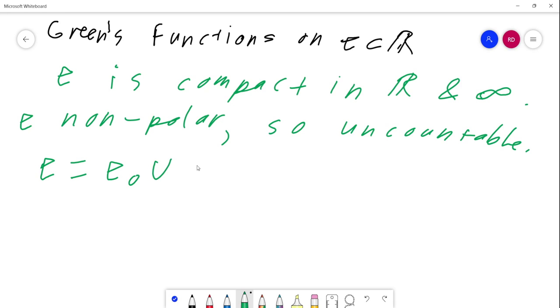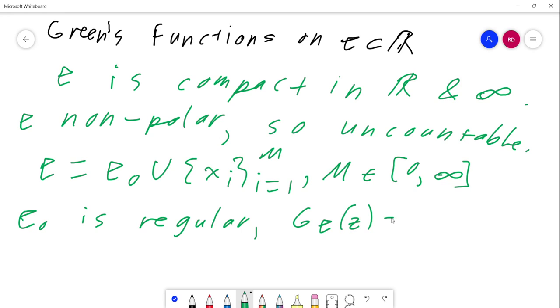So we'll split up E into E₀ union Xᵢ from i equals 1 to M, where M is somewhere in 0 to infinity. And by that I mean that E₀ is regular, which is the same as saying that the Green's function is 0 on E₀. And the Xᵢ are all irregular. So the Xᵢ can be at most a polar set.